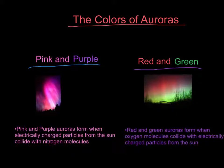Red and green auroras form when oxygen molecules collide with electrically charged particles from the Sun. So, red and green are oxygen molecules and pink and purple are nitrogen molecules.